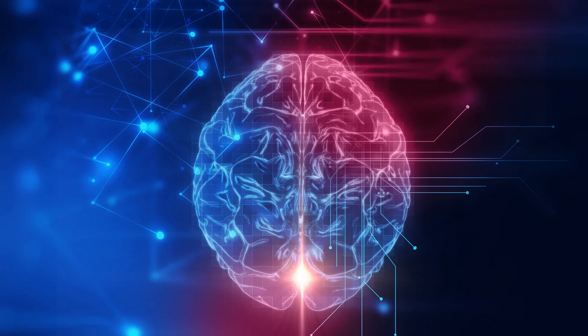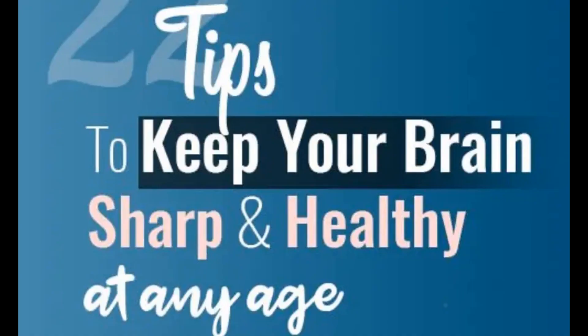Consume foods high in B vitamins. B vitamins, including B6, B12, and folate, play a role in cognitive function and the production of neurotransmitters in the brain. Include foods rich in these vitamins such as leafy green vegetables, legumes, fortified cereals, eggs, poultry, fish, and dairy products.